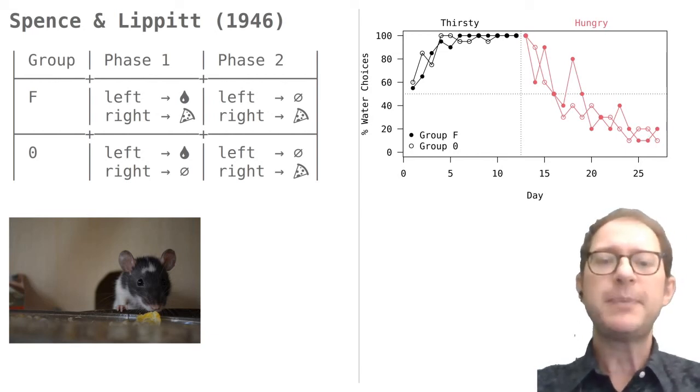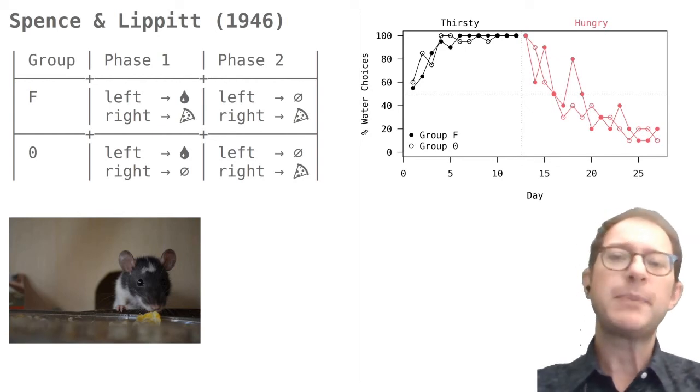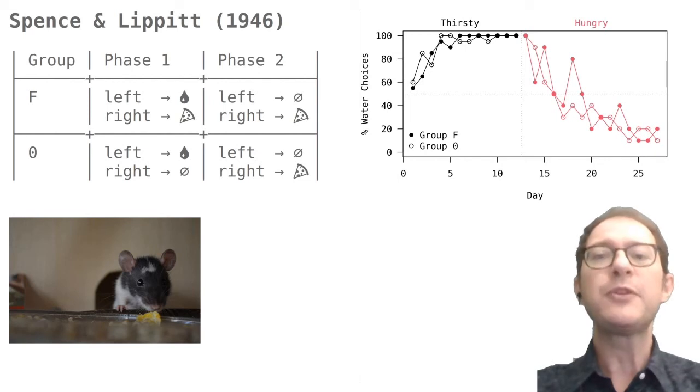From this, Spence and Lippitt concluded that rats in group F did not learn anything about the location of the food, even if they had performed the action of going right and finding the food many times. In fact, the authors had planned the experiment so that rats in group F had been forced to go right and find the food a number of times.